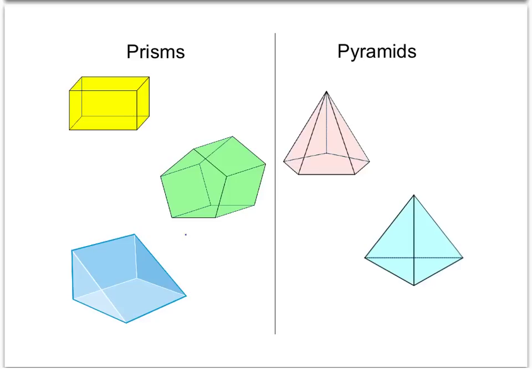Next, we want to talk about the difference between prisms and pyramids. A prism is going to have two bases that are opposite, parallel, and congruent to each other. You can see on each prism that there's an opposite set of triangles or pentagons, whereas pyramids only have one base and always come up to a tip.